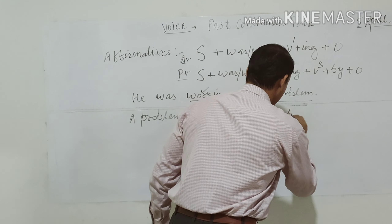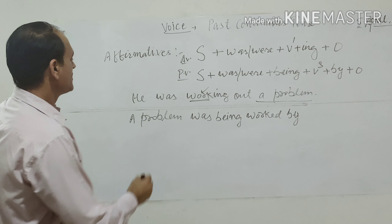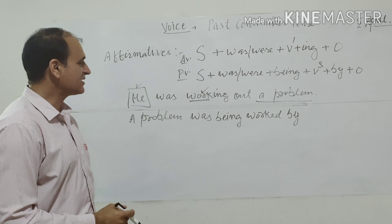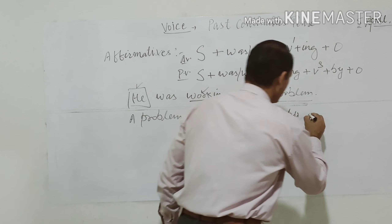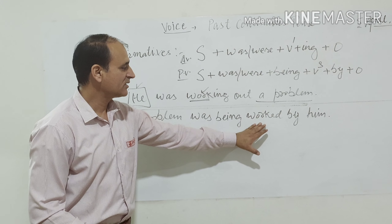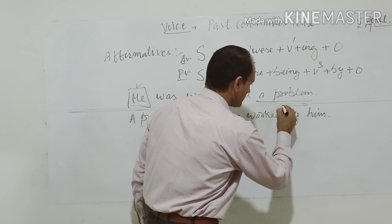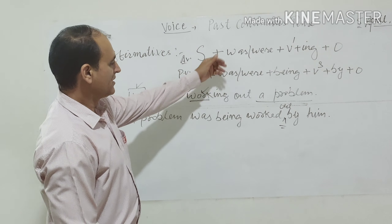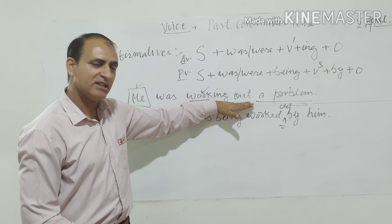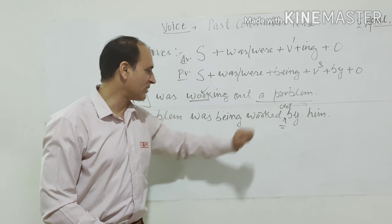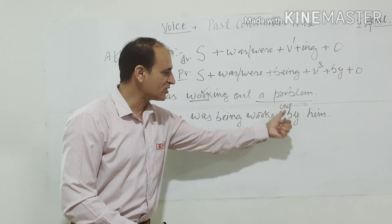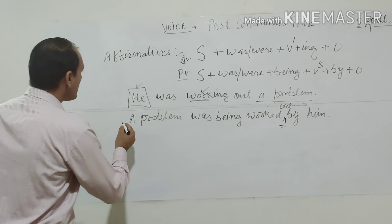'Being' is followed by the third form of the verb — 'work' becomes 'worked'. Then we add the preposition and object. When 'he' moves from subject to object position, it becomes 'him'. Note: if the verb in active voice is followed by a preposition or adverb particle, that same word must be transferred into passive. So our passive voice is: 'A problem was being worked out by him.'